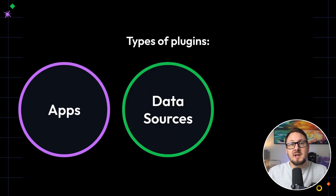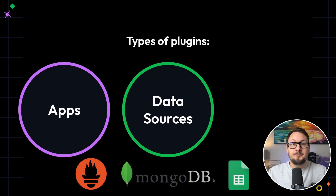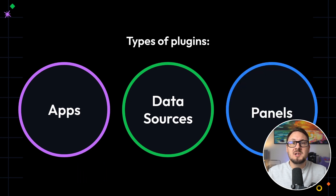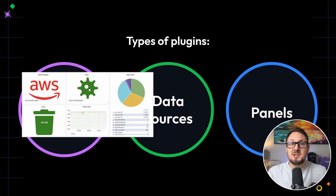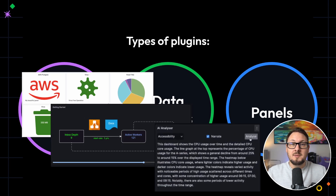Data sources enable Grafana to connect to external services and query data. Examples include Prometheus, MongoDB, and Google Sheets. Panels allow you to create custom visualizations or widgets that can be added to dashboards. These can be things like SVG displays, flow diagrams, or even AI-powered dashboard widgets.